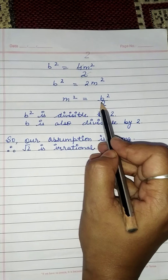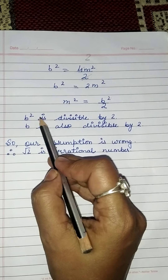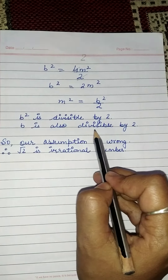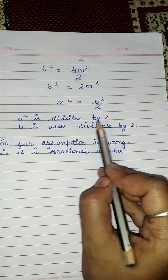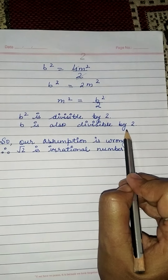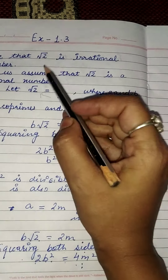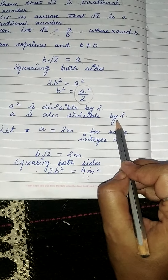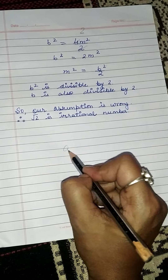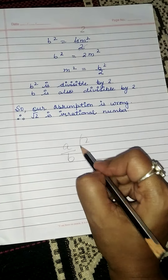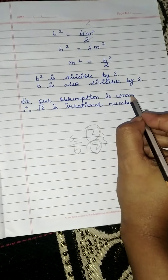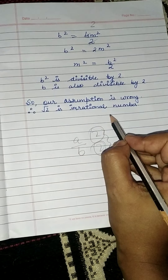From this, b square is divisible by 2. If b square is divisible by 2, then b is also divisible by 2. But at the start, we assumed that a and b are coprimes. However, we are getting that both a and b are divisible by 2, meaning 2 is a common factor. This contradicts our assumption. Therefore, our supposition is wrong, and under root 2 is an irrational number.